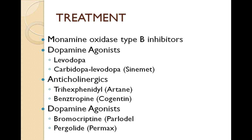For treatment of Parkinson's disease, monoamine oxidase type B inhibitors are used. Monoamine oxidase produces free radicals that may be involved with neurodegeneration. Because of the damaged substantia nigra, the patient has decreased dopamine. We give MAO inhibitors to stop the damage of the substantia nigra, because that's where our dopamine originates.